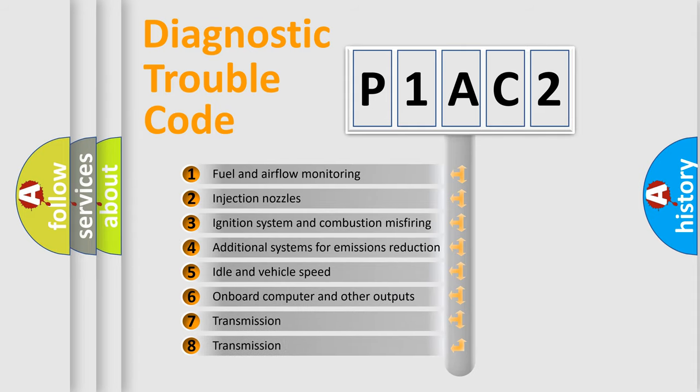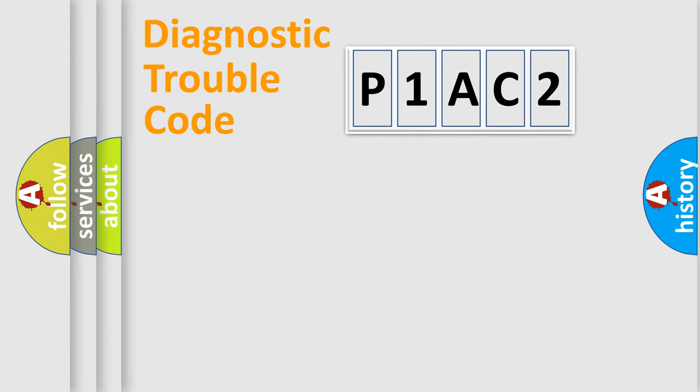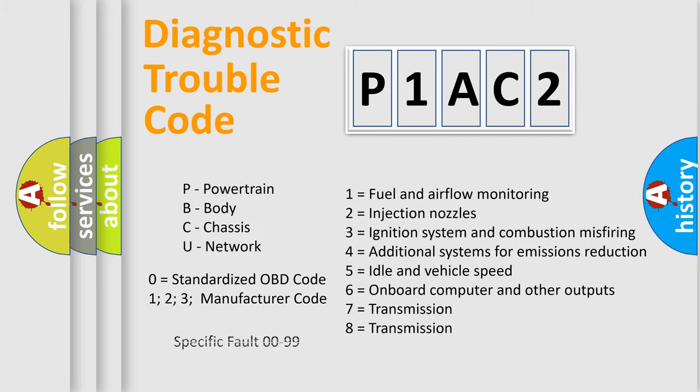The third character specifies a subset of errors. The distribution shown is valid only for the standardized DTC code. Only the last two characters define the specific fault of the group. Let's not forget that such a division is valid only if the second character code is expressed by the number zero.